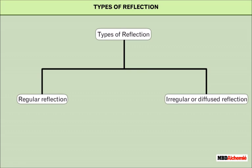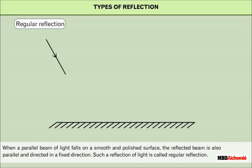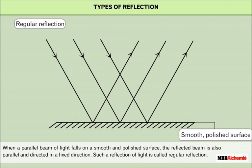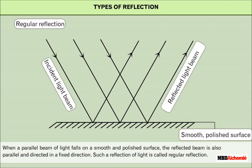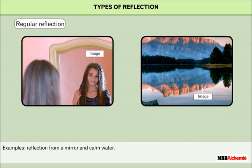Let us see what regular reflection is. When a parallel beam of light falls on a smooth and polished surface, the reflected beam is also parallel and directed in a fixed direction. Such a reflection of light is called regular reflection. This type of reflection enables formation of image. Examples: reflection from a mirror and calm water.